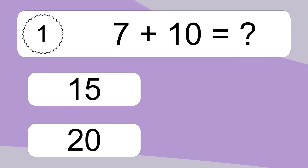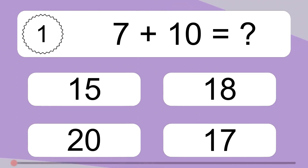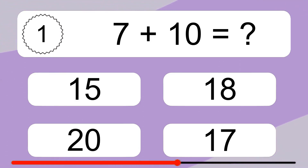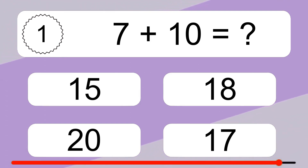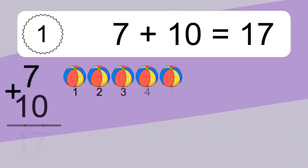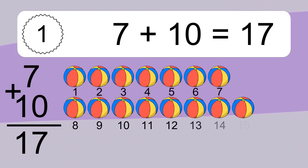7 plus 10 equals what? 7 plus 10 equals 17.